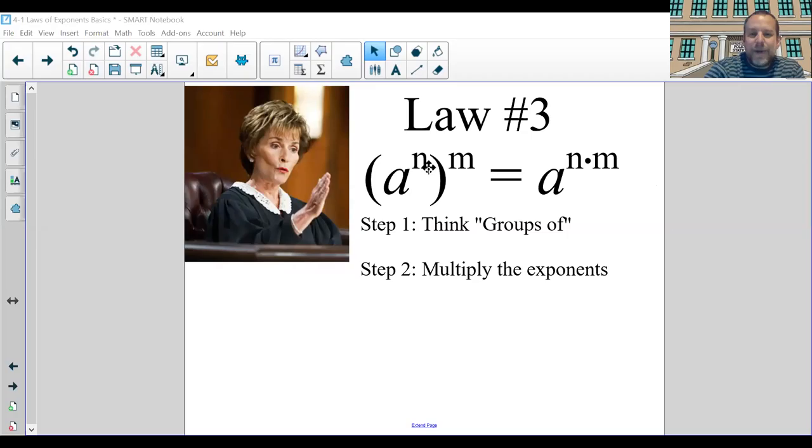I'm realizing that this is backwards behind me. That's a nice touch. Okay, law number three is a to the nth power in parentheses to the m power is a to the n times m power. So in your head you should think groups of, and you should multiply the exponents.